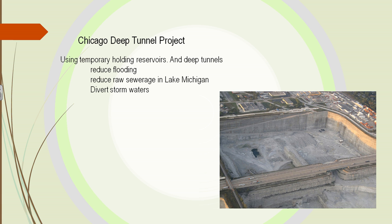Chicago also has a deep tunnel project that captures stormwater. In the past, when there was a large amount of rain, the system would overflow and that overflow would go out into Lake Michigan and pollute the lake. Now the city is able to divert stormwater into the deep tunnel instead.